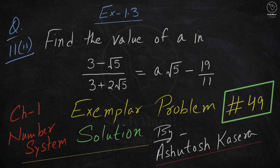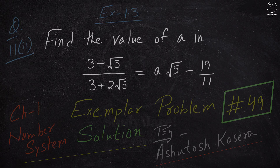Find the value of A in (3 minus root 5) upon (3 plus 2 root 5) equals A root 5 minus 19 by 11.